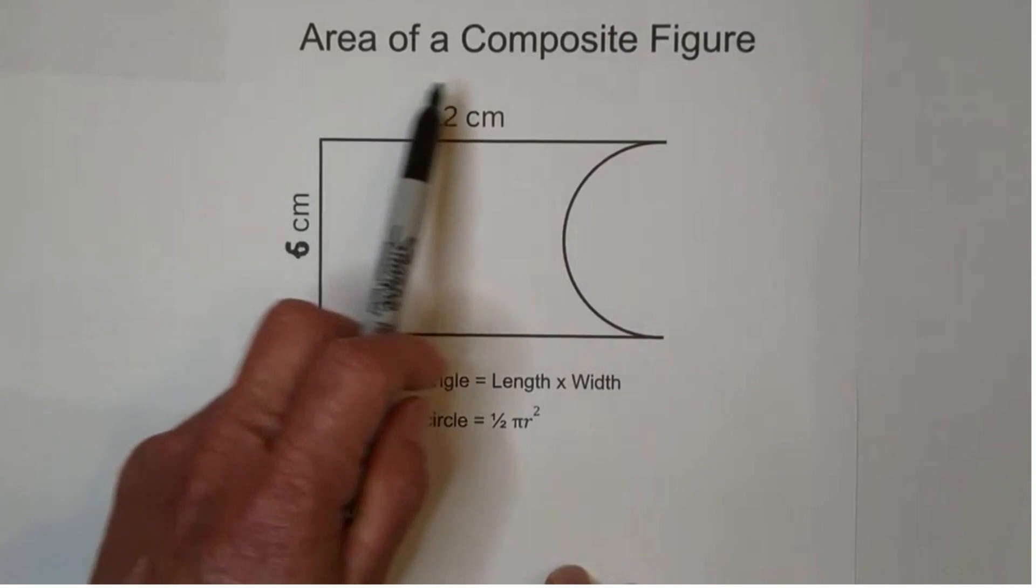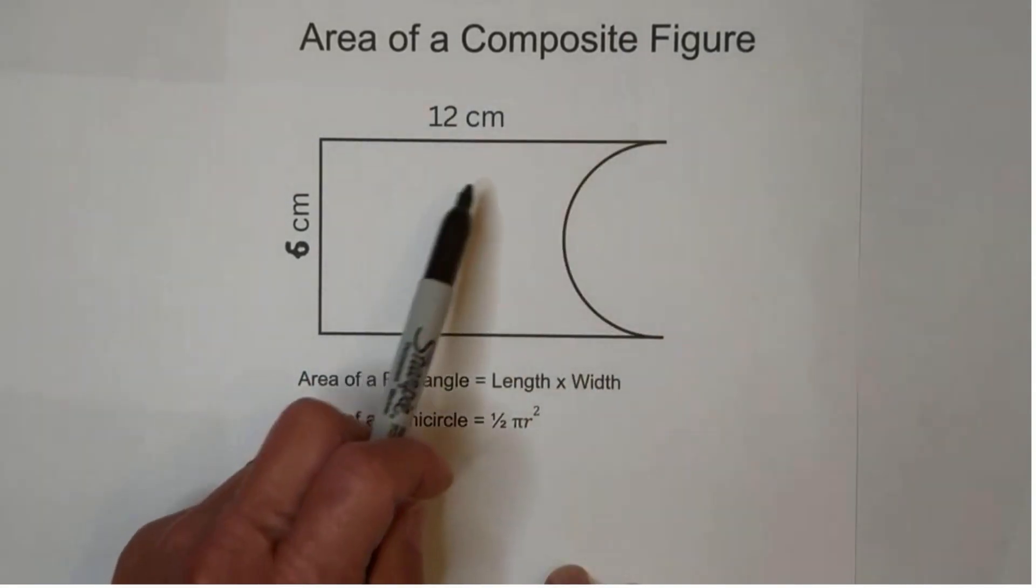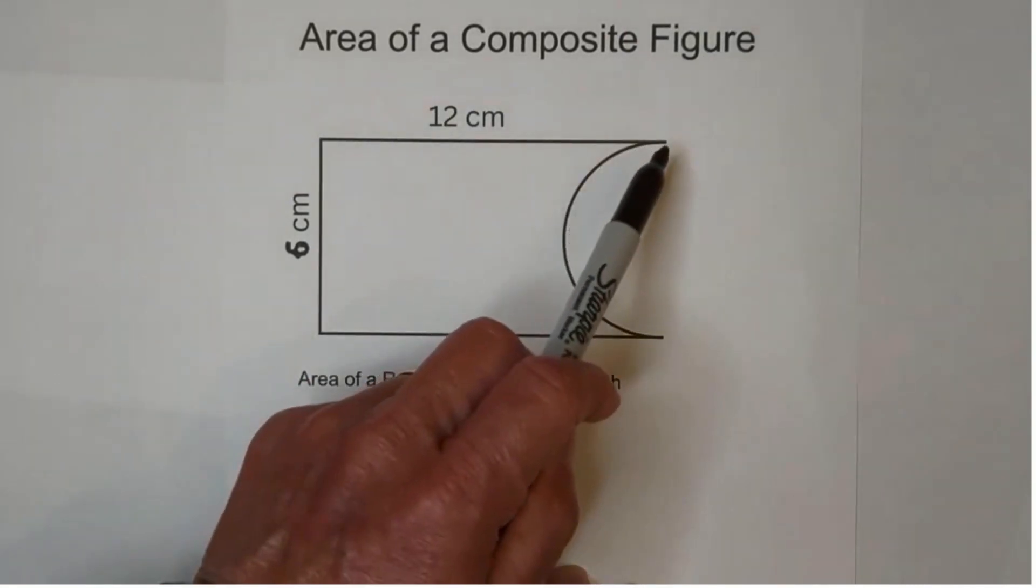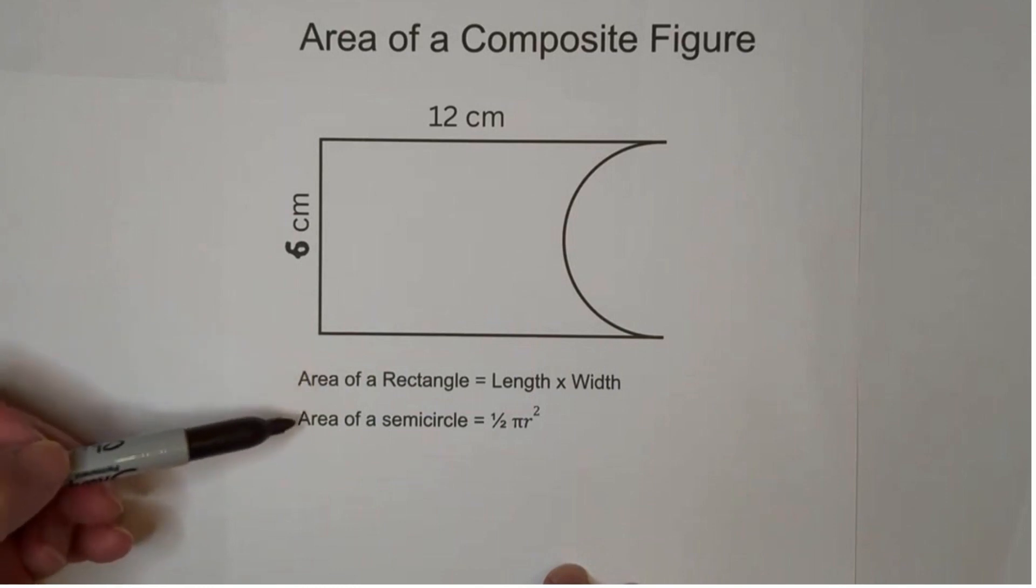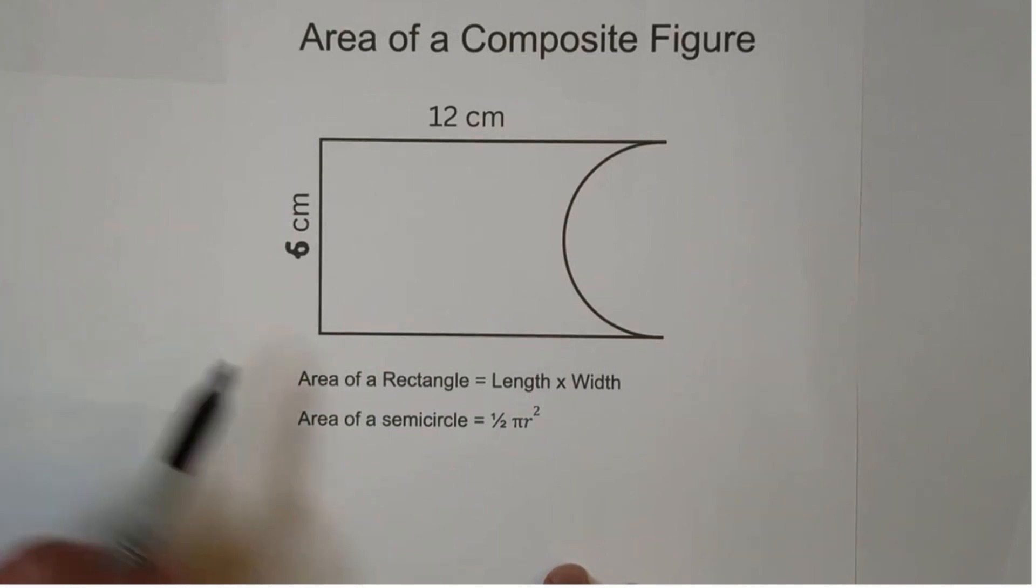Let's go over how to find the area of this composite figure. You have a rectangle and then we're going to need to subtract out this semicircle. So what we're going to do is have the area of the rectangle and then the area of a semicircle. The area of a rectangle is length times width.